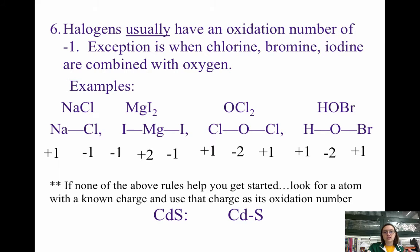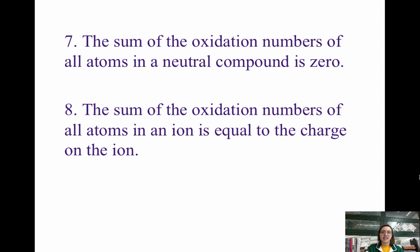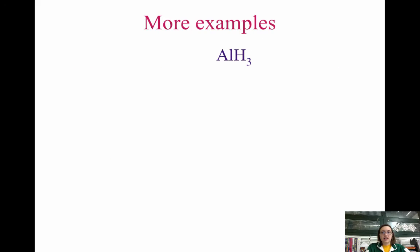For example, in CdS, we know sulfur forms a −2 ion, which means cadmium would be +2. The reason is that the sum of all oxidation numbers must equal zero for a neutral compound. As just stated: the sum of the oxidation numbers of all atoms in a neutral compound is zero, and the sum of the oxidation numbers in an ion must equal the charge of the ion.